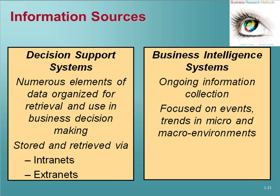When elements of data are organized for retrieval, they collectively constitute a business decision support system. This data is often shared over an intranet or extranet. An intranet is a private network contained within the enterprise, not available to the public at large; it may consist of many interlinked local area networks and typically includes connections to the internet. Its main purpose is to share company information and computing resources among internal audiences. An extranet is a private network that uses internet protocols and the public telecommunications system to share an organization's information, data, or operations with external suppliers, vendors, or customers — it can be viewed as the external portion of a company's intranet.